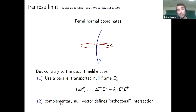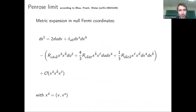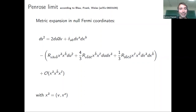A similar procedure works for the null case. The main difference is you start with a null frame and must be more careful about what 'orthogonal' means. You use the complementary null vector to define the orthogonal directions — rather than the tangent itself as in the timelike case. You can then define null Fermi coordinates and expand the metric in them. To second order you get: a flat-space piece with u, v, and transverse coordinates x^a, plus second-order corrections.